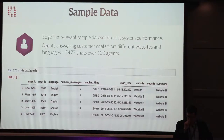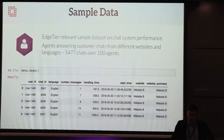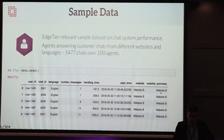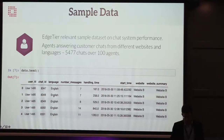For this example today, we're going to talk through a semi-real dataset — the kind of dataset we would receive at EdgeTier. Each entry is a chat that happened between an agent and a customer. Each one has a number of messages, a start time when the chat happened, and a total handling time: how many seconds it took for the agent to process that chat. It comes from ten different websites and across seven languages, but most are English. The dataset has 5,477 chats with 100 different agents.